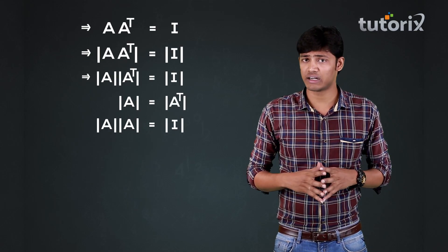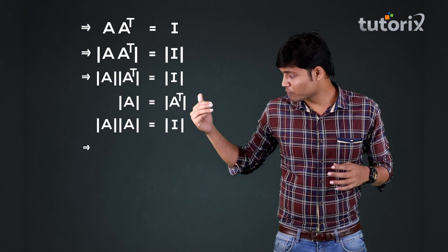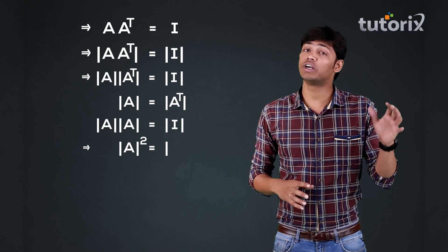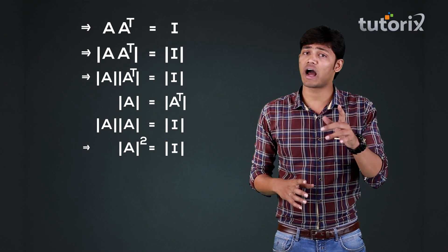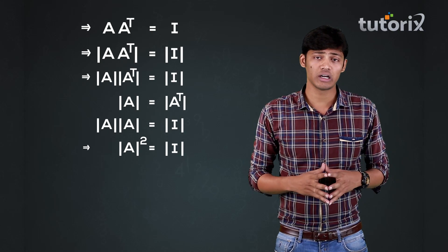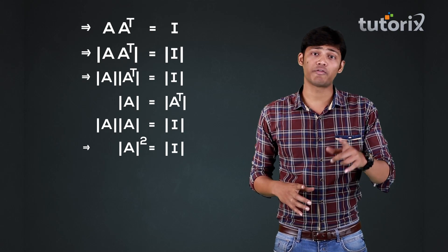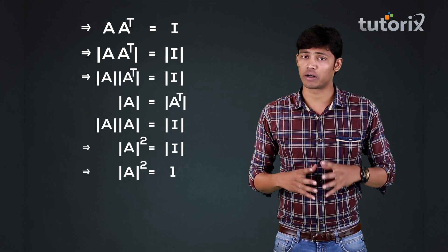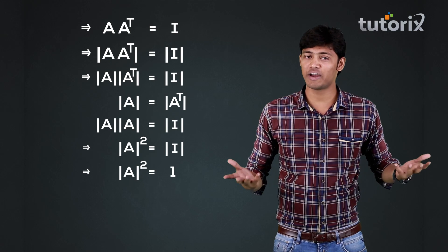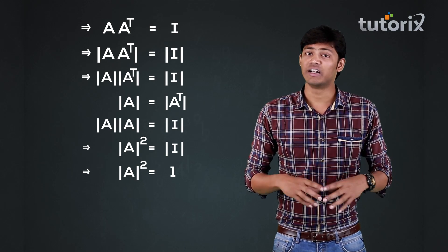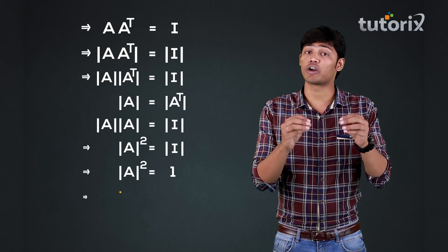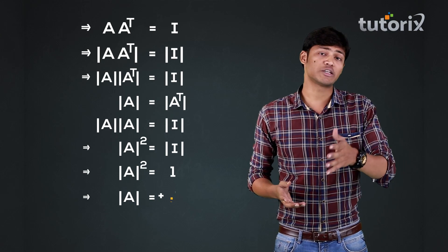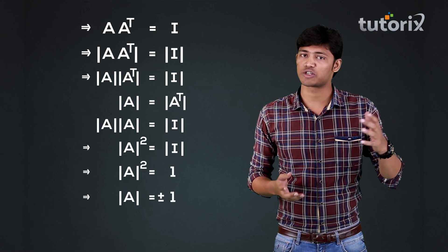So finally, we will get determinant of A whole squared is equal to determinant of I. And we know that the determinant of an identity matrix is always equal to 1, from which we can conclude that the determinant of an orthogonal matrix is equal to plus 1 or minus 1.